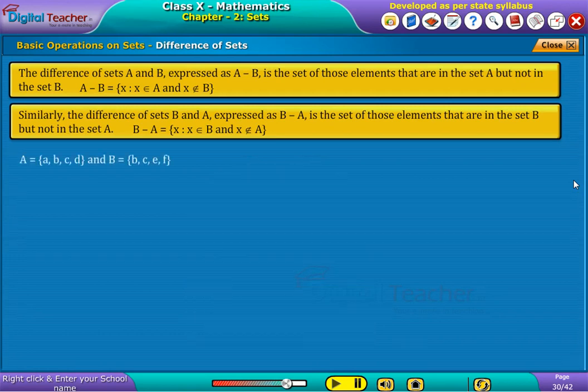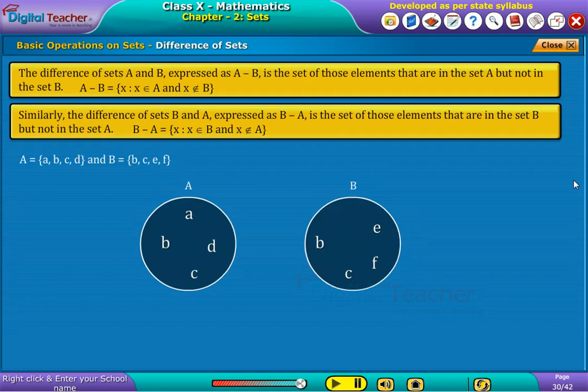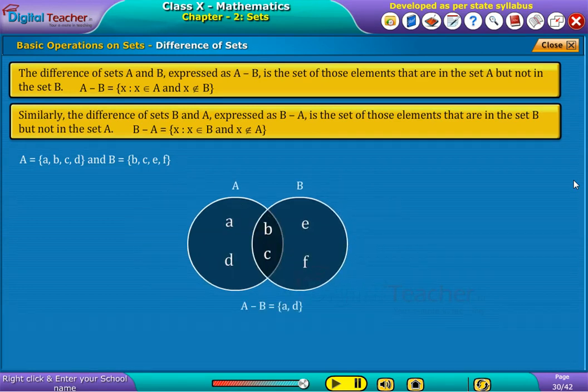If A is a set of A, B, C, D and B is a set of B, C, E, F, then A minus B equals A, D and B minus A equals E, F.